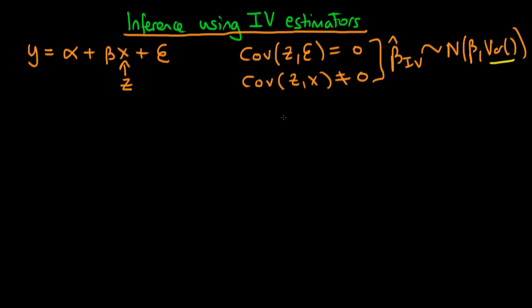Just like the least squares estimator is asymptotically normally distributed, so is the IV estimator, and that should come as no great surprise because there's quite a lot of symmetry between IV estimators and least squares estimators. In these contexts you can just go ahead and use the normal T and F statistics like you would do for inference when doing least squares regression.